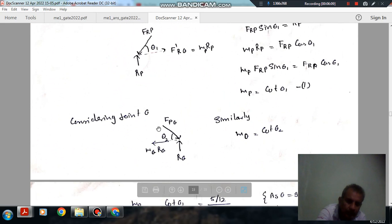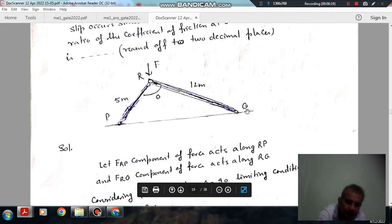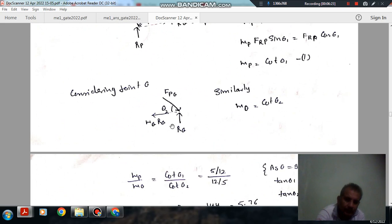And similar procedure can be applied to this joint also. So here the force is F_RQ and angle is theta2, and the reaction is R_Q. As this joint tries to slip in this direction, the force of friction is in this direction.